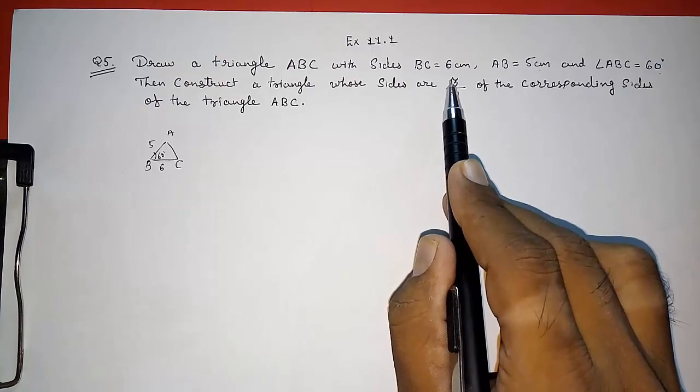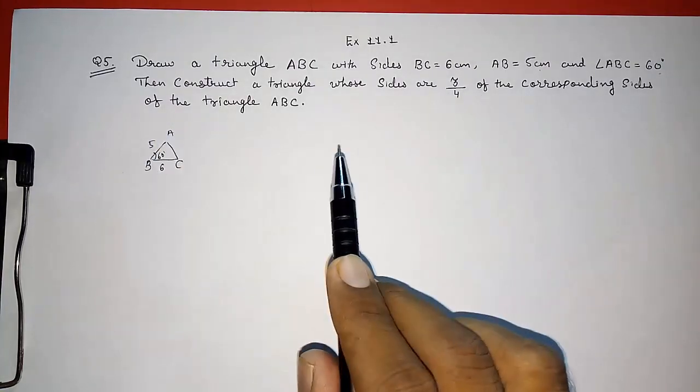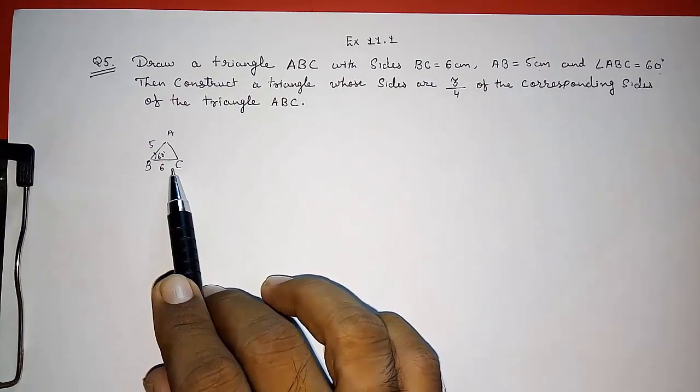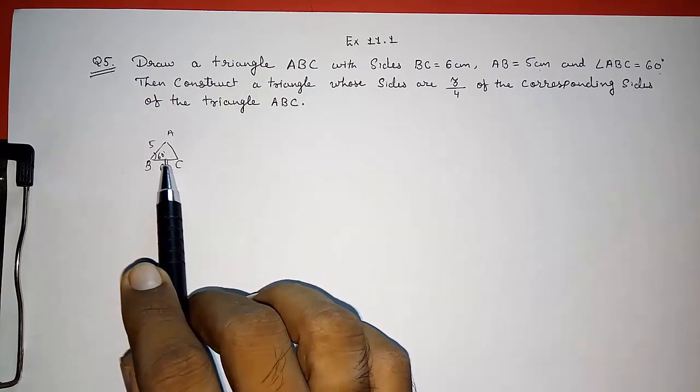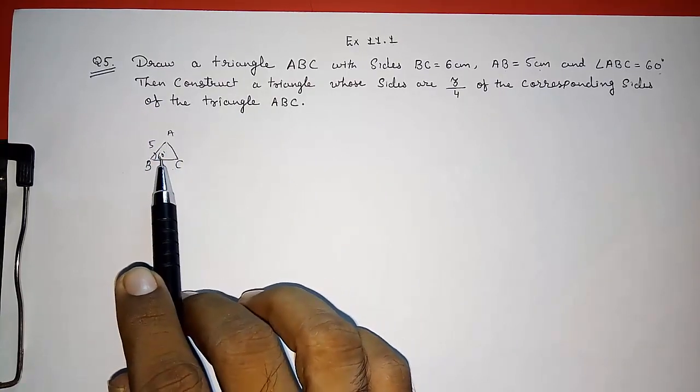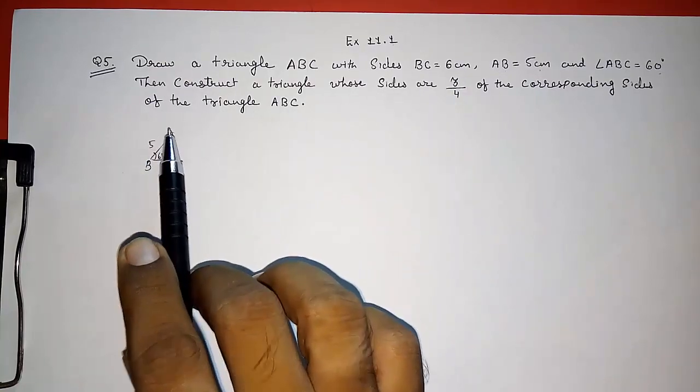We have to draw 3 parts out of 4 parts. So this will be our 4 part and that 3 part. So that triangle will be smaller than this triangle and that triangle will be in the interior of this triangle. So first we are going to draw this triangle, then 3 by 4 which will be in the interior of this triangle.